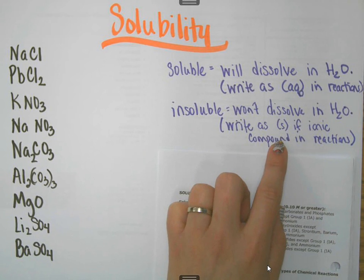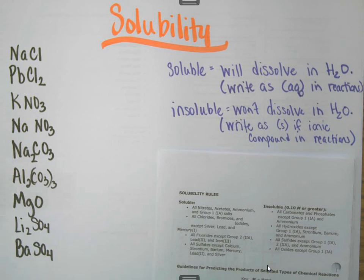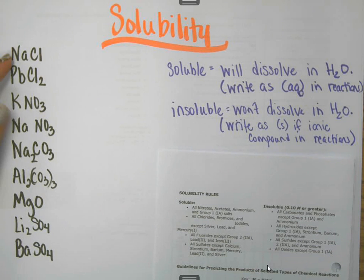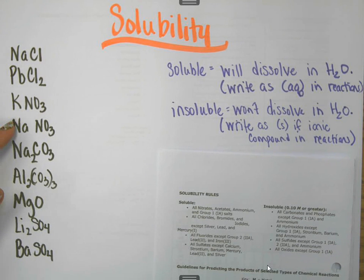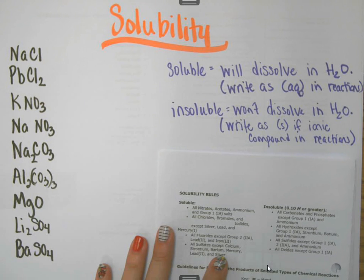It is possible that you could have other things like liquids or gases, but for the most part you can expect to have a solid. Over here we have a list of substances that we're going to identify whether or not they're soluble in water. We're using the solubility rules on the reference table.